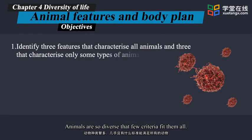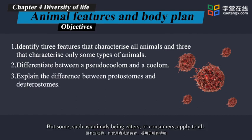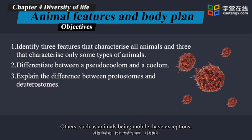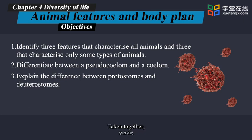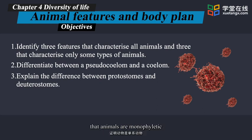Animals are so diverse that few criteria fit them all, but some, such as animals being eaters or consumers, apply to all. Others, such as animals being mobile, have exceptions. Taken together, the universal characteristics and other features of major importance exhibited by most species are convincing evidence that animals are monophyletic — that they descended from a common ancestor.